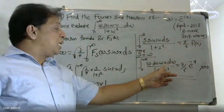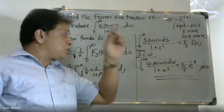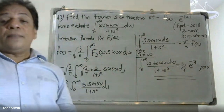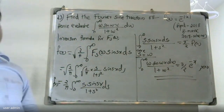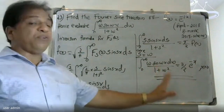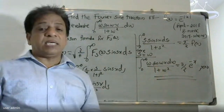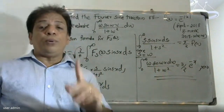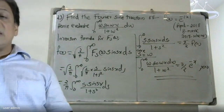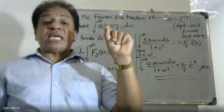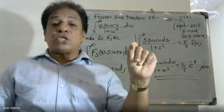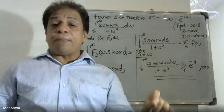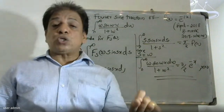Therefore, the final answer is: integral from 0 to infinity of omega sin(omega x) d omega by (1 plus omega squared) is equal to pi by 2 times e raised to minus x, where x is greater than 0.